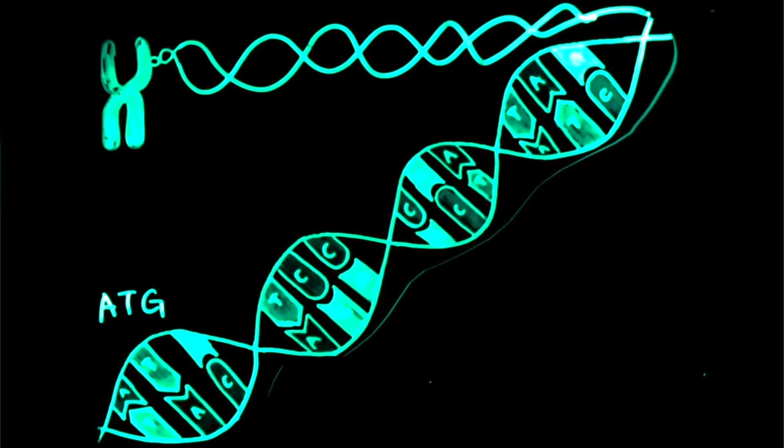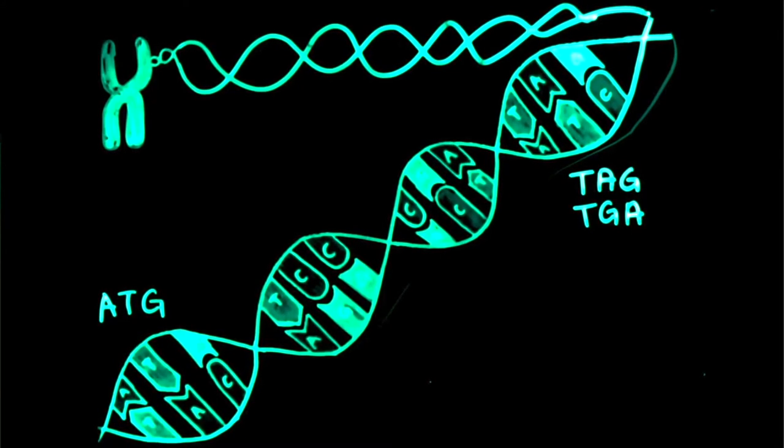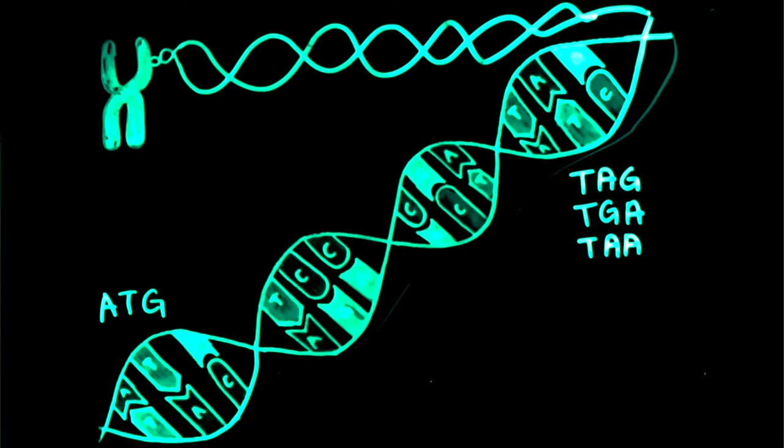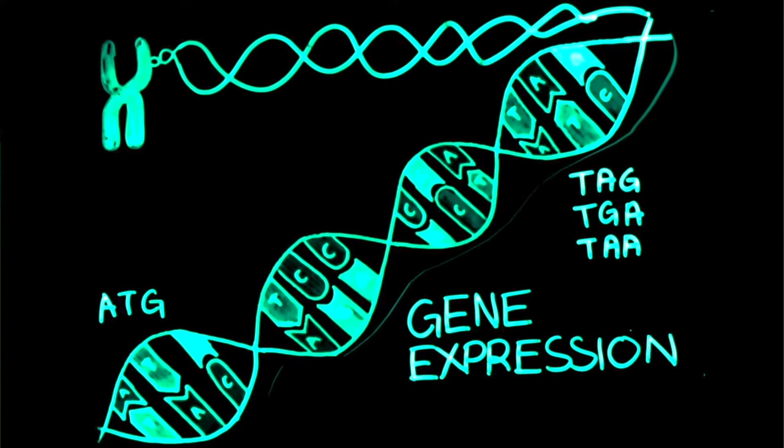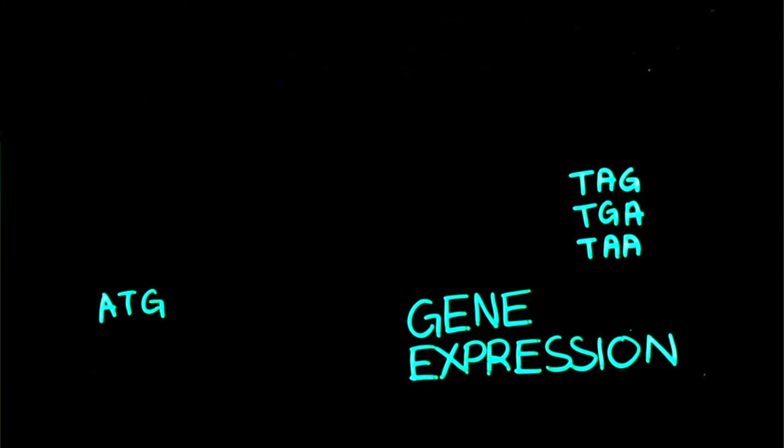These usually start with the codon ATG and end with the codon TAG, TGA, or TAA. In certain genes, the encoded RNA is used to synthesize proteins in a process called gene expression. For these genes, the process can be divided into two steps.